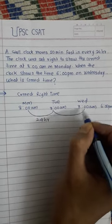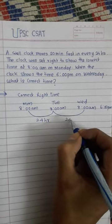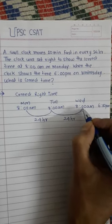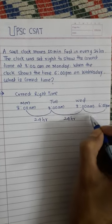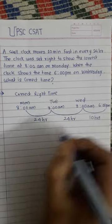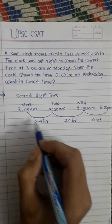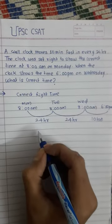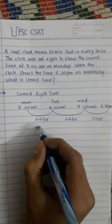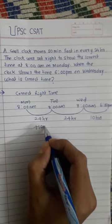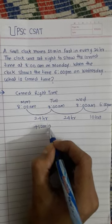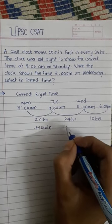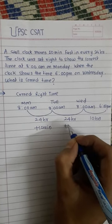Again, this next interval is 24 hours. In every 24 hours the gain is 10 minutes. So for the first 24 hours it is plus 10 minutes, and for the second 24 hours it is again plus 10 minutes.